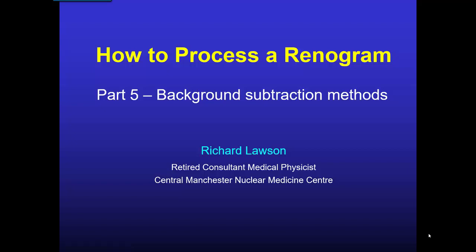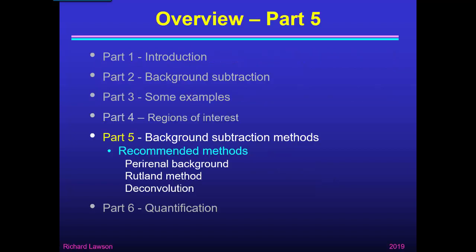This is part 5 of my talk about how to process a renogram. In part 1 I gave an introduction and explained what a renogram is. In part 2 I talked about the importance of background subtraction, in part 3 I showed examples using different background subtraction methods, and in part 4 I talked about how to draw the regions of interest. Now in part 5 I'm going to talk about the recommended background subtraction methods — the perirenal background and the Rutland method — as well as deconvolution.